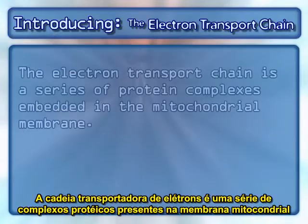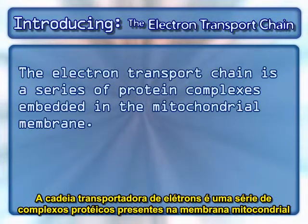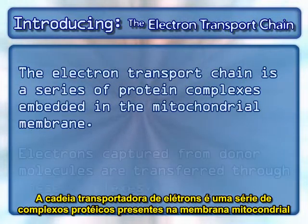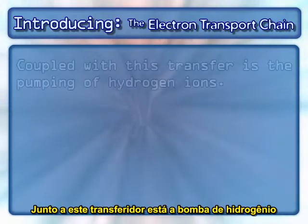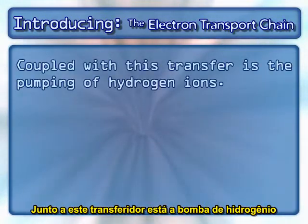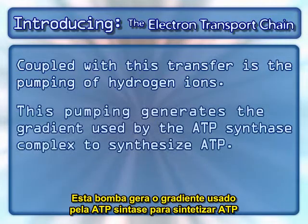The electron transport chain is a series of protein complexes embedded in the mitochondrial membrane. Electrons captured from donor molecules are transferred through these complexes. Coupled with this transfer is the pumping of hydrogen ions, which generates the gradient used by the ATP synthase complex to synthesize ATP.